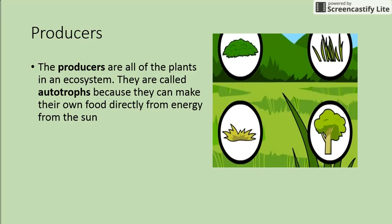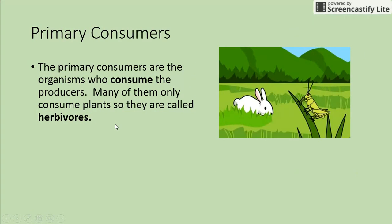We have some key characters in our ecosystem. Producers are all the plants in an ecosystem; they're called autotrophs because they can make their own food directly from energy from the sun. We also have primary consumers, who are the organisms that consume the producers. Many of them only consume plants, so they are called herbivores — consume is just a fancy way to say eat.